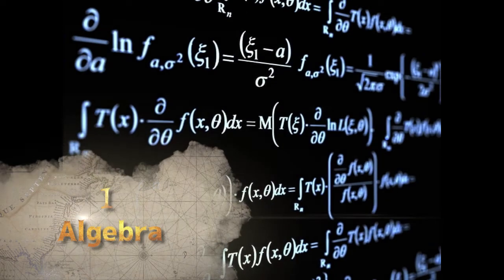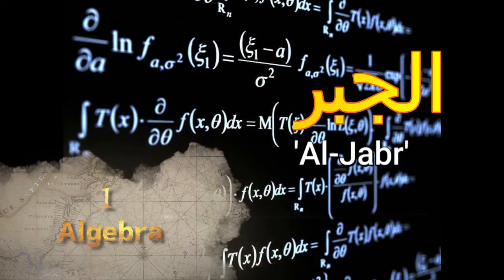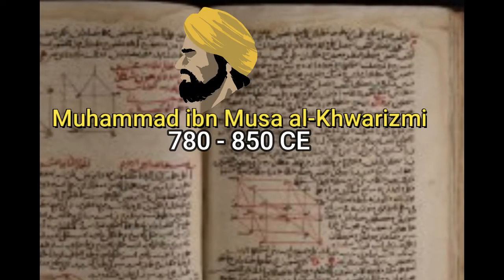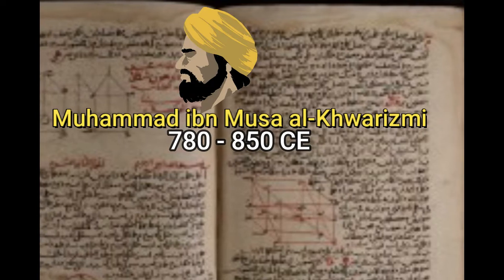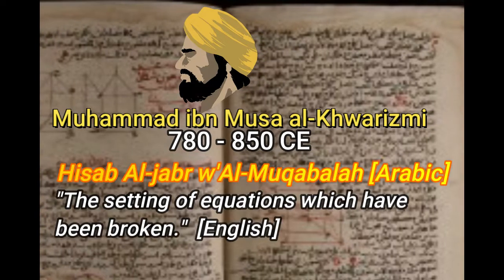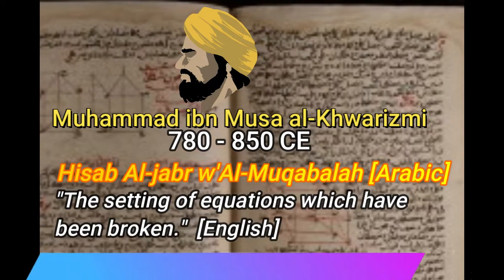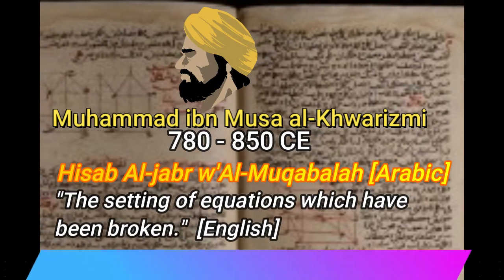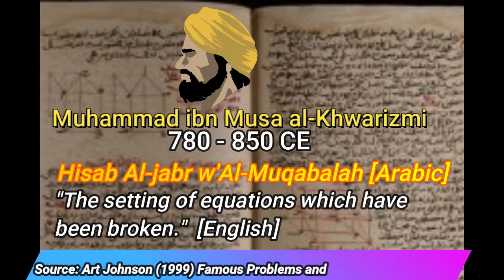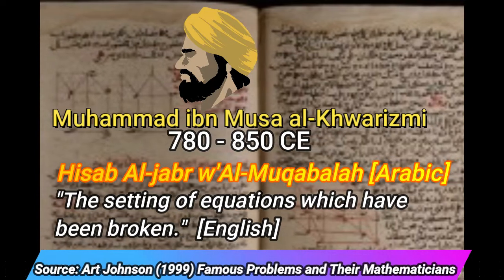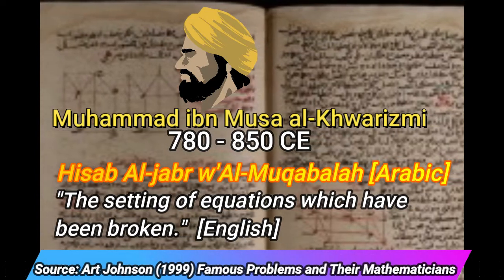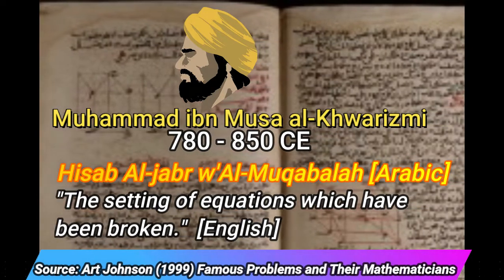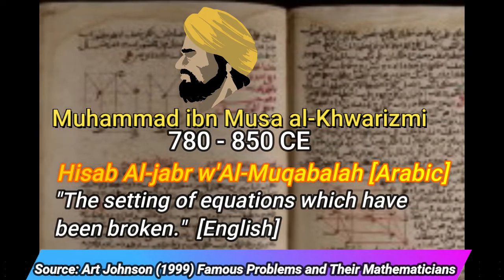Algebra. The term comes from the Arabic term al-Jabr, a word first coined by the legendary mathematician Muhammad ibn Musa al-Khawarizmi in his work Hasib al-Jabr wa al-Muqabla, which loosely translates to 'the setting of equations which have been broken.' In other words, it was a book about solving equations.